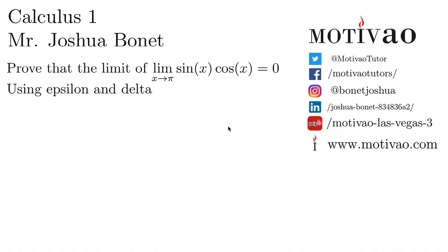This is Joshua from MultiVal Calculus 1, proving that the limit when x approaches pi of sine of x times cosine of x equals 0, using epsilon and delta.